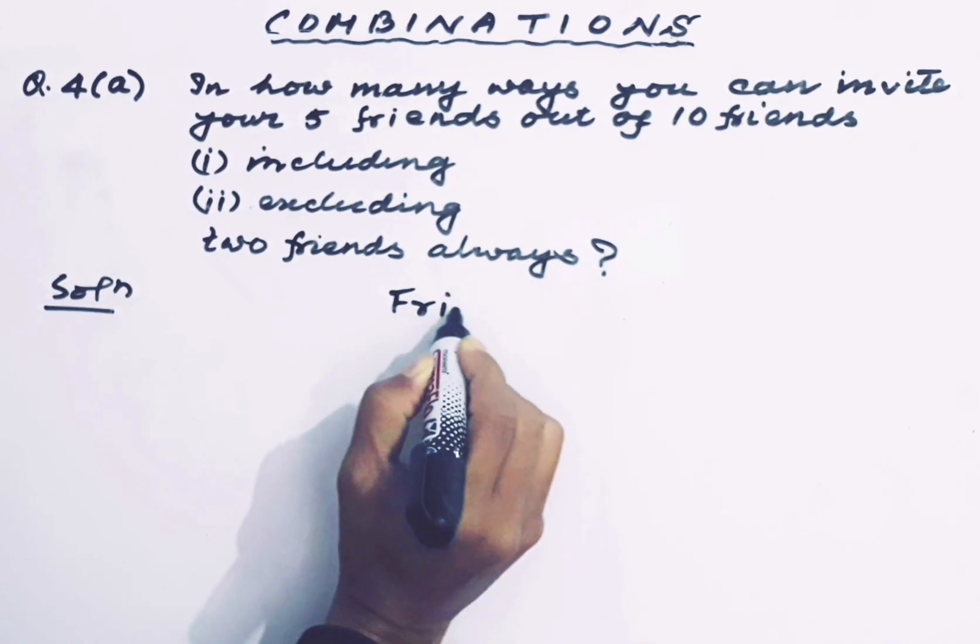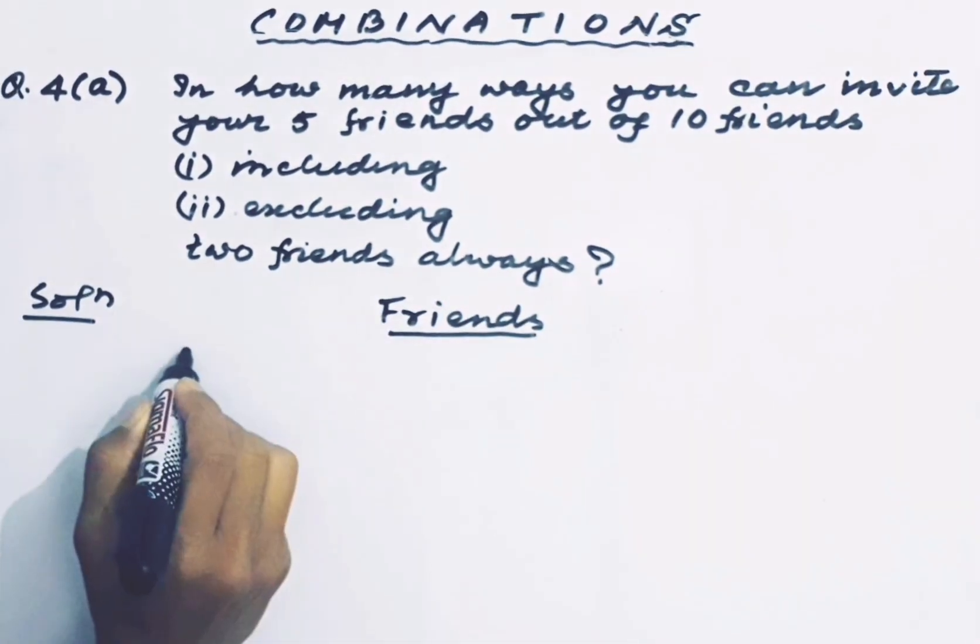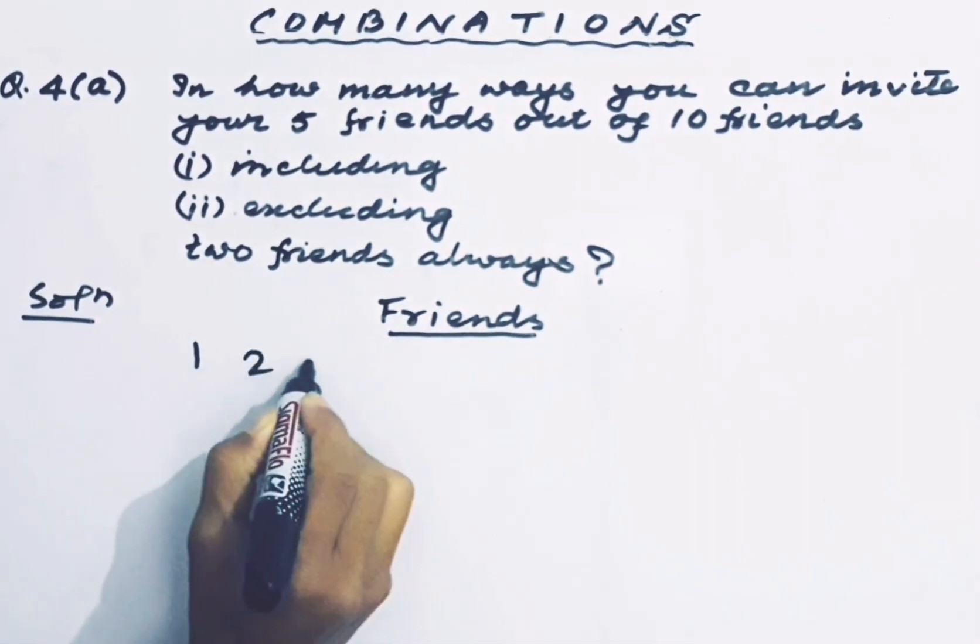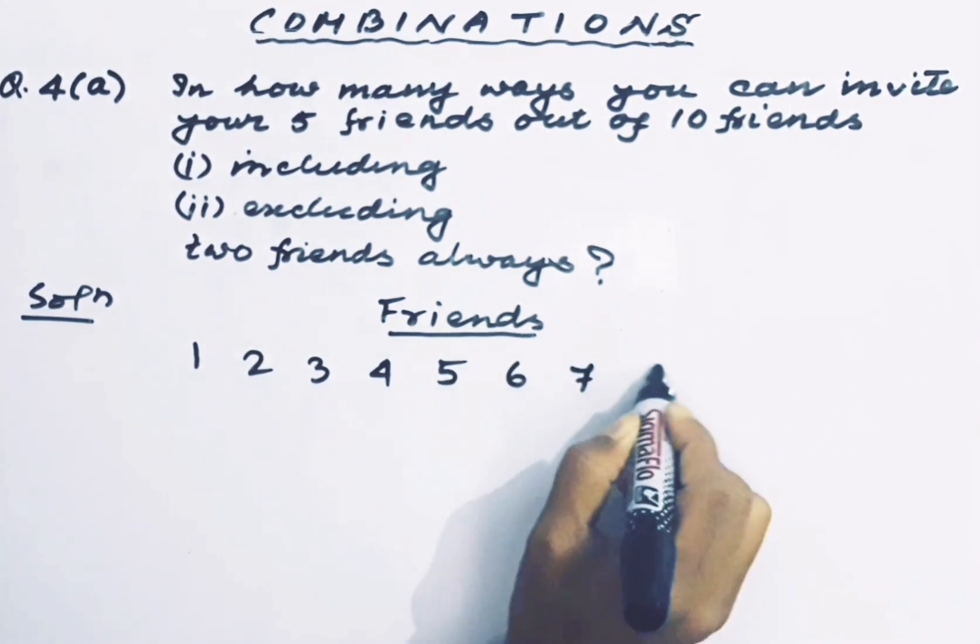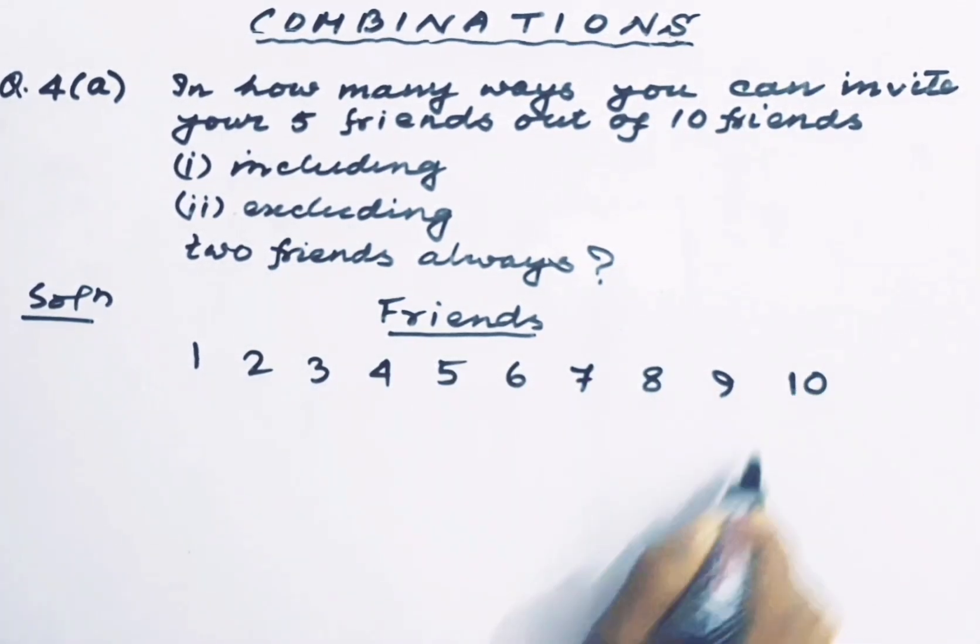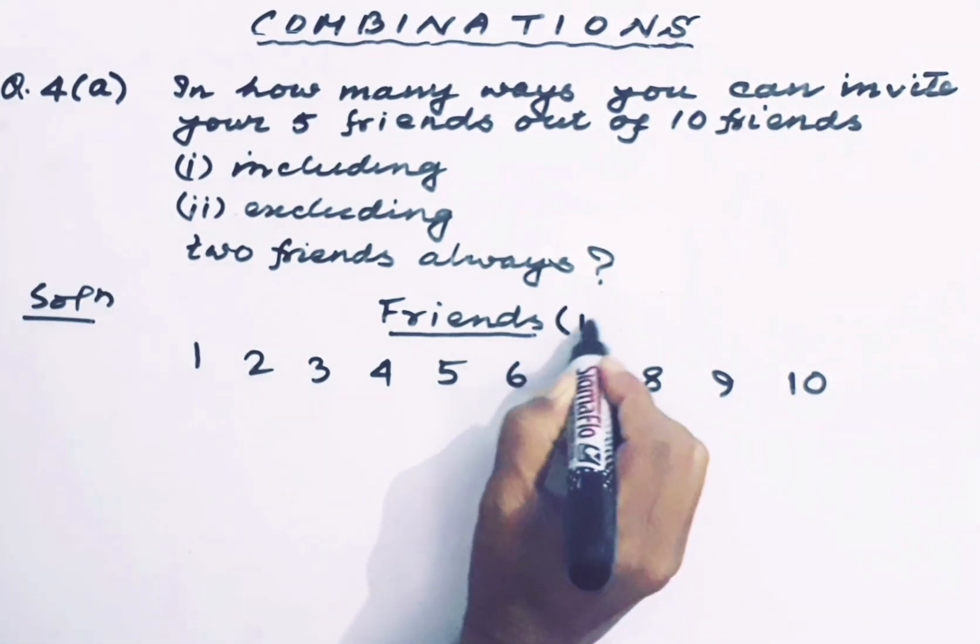First, we number the friends: Friend 1, Friend 2, Friend 3, Friend 4, Friend 5, Friend 6, Friend 7, Friend 8, Friend 9, and Friend 10. That is a total number of 10 friends.